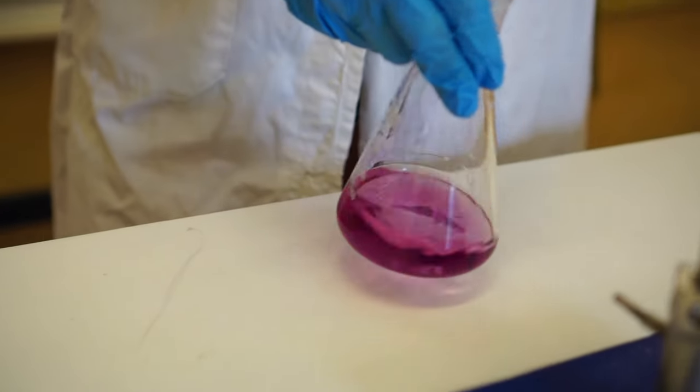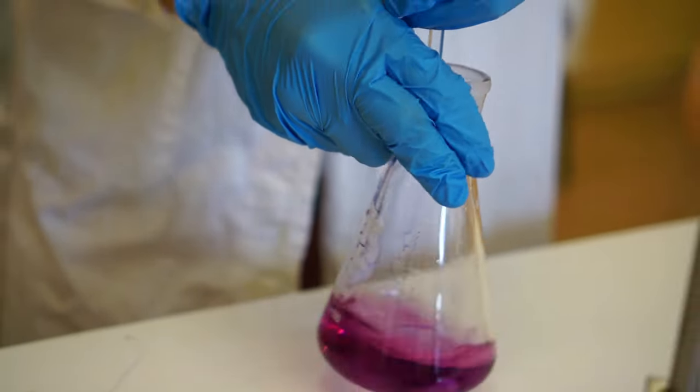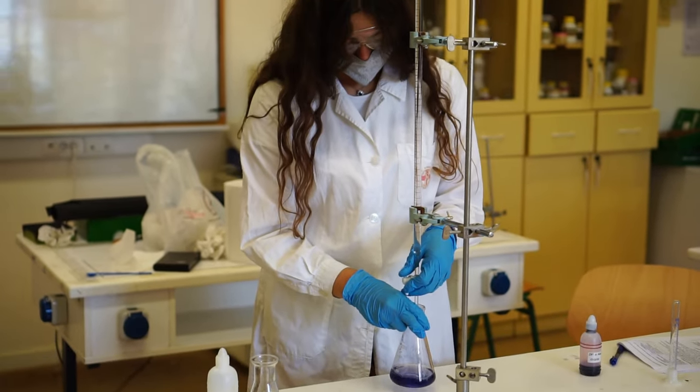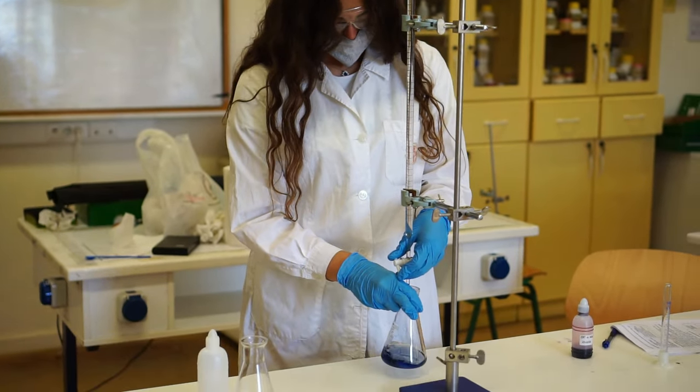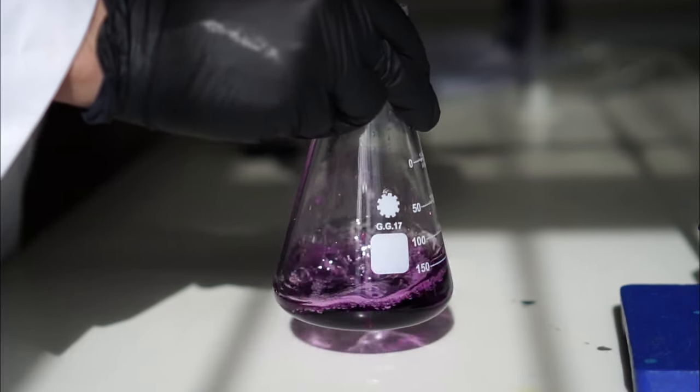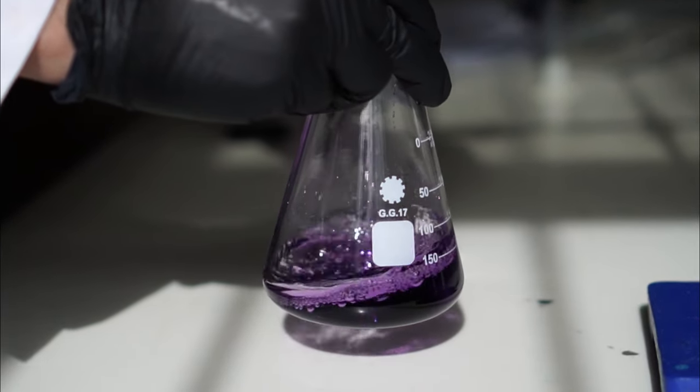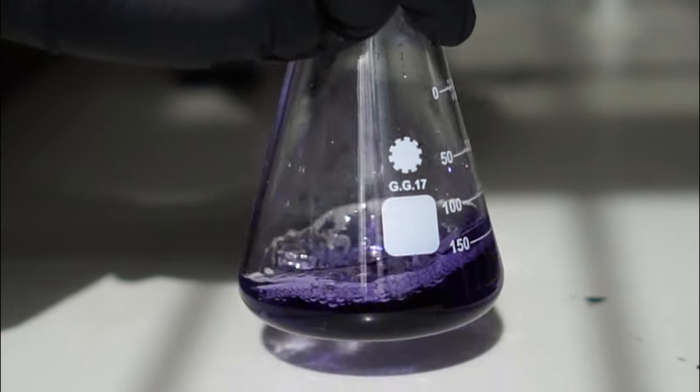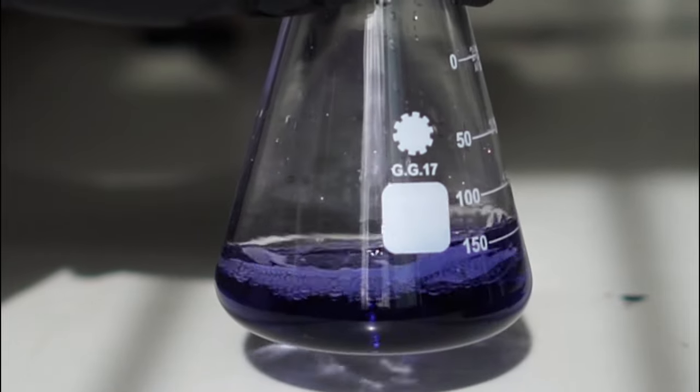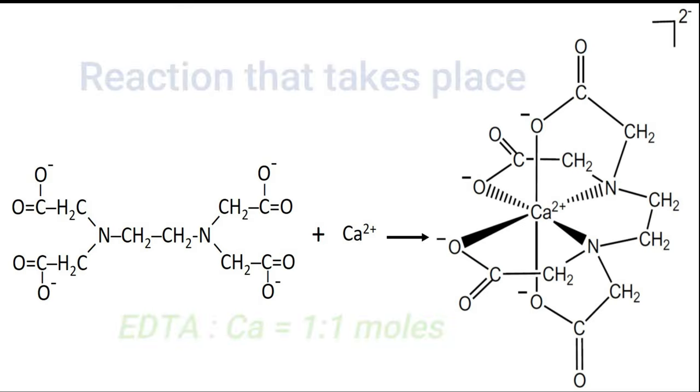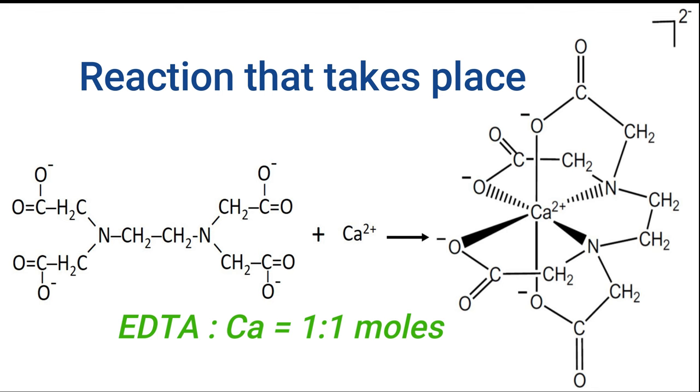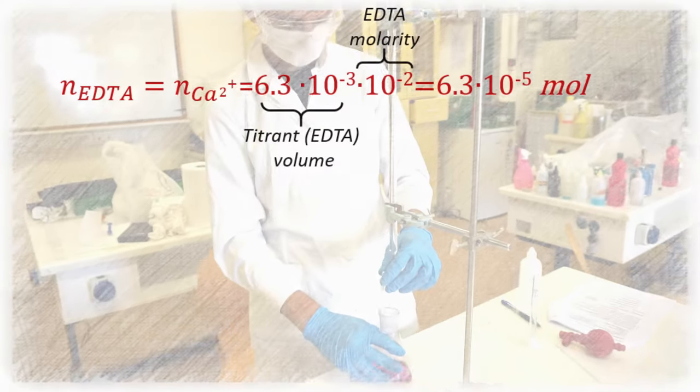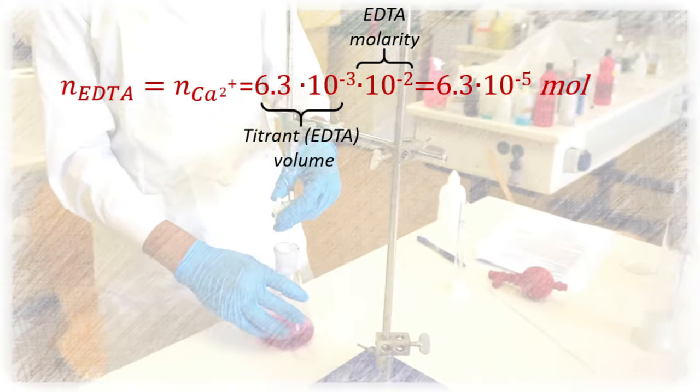When approaching equivalence point, EDTA must be added very slowly. With some slow motion footage, it is easier to follow the sequential color changes. Normally, we perform 2 or 3 identical titrations and use the mean value of EDTA volume for our calculations.